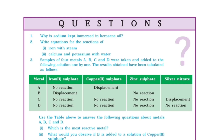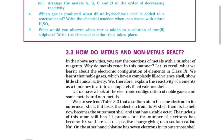Use the table to answer: (1) Which is the most reactive metal? (2) What would you observe if B is added to a solution of copper sulfate? (3) Arrange the metals A, B, C, and D in the order of decreasing reactivity. (4) Which gas is produced when dilute hydrochloric acid is added to a reactive metal? Write the chemical reaction when iron reacts with dilute H₂SO₄. (5) What would you observe when zinc is added to a solution of iron(II) sulfate? Write the chemical reaction.